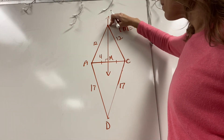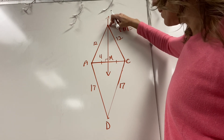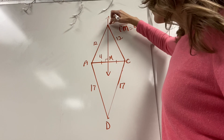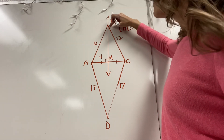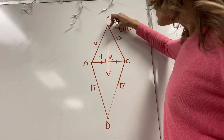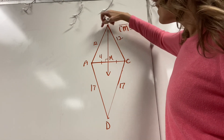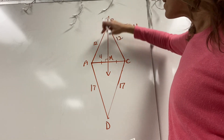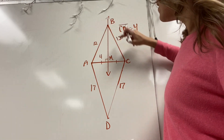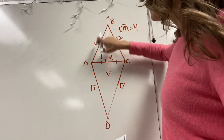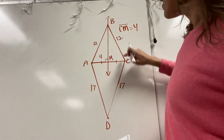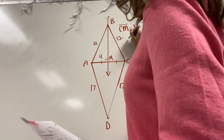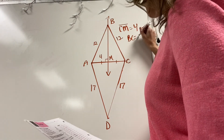A point that lies on the perpendicular bisector of a segment is equidistant from the endpoints of that segment. So B is the same distance from A as it is from C, which means if this side is 12, then this side must also be 12. So for number two, BC equals 12.